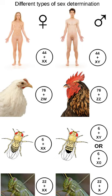When a ZW species, such as the Komodo dragon, reproduces parthenogenetically, usually only males are produced. This is due to the fact that the haploid eggs double their chromosomes, resulting in ZZ or WW. The ZZ become males, but the WW are not viable and are not brought to term.